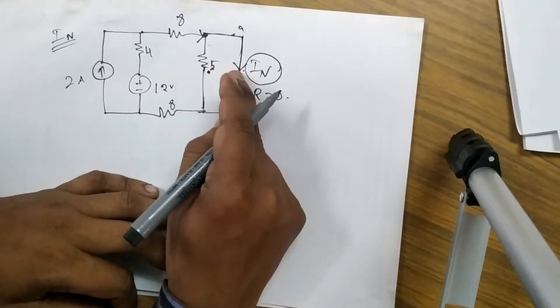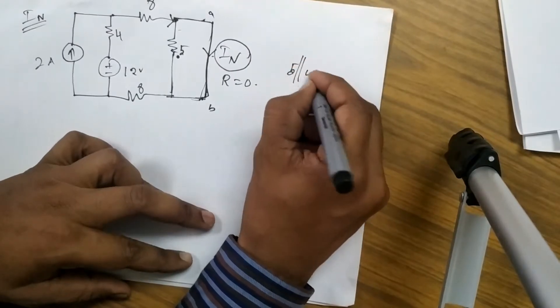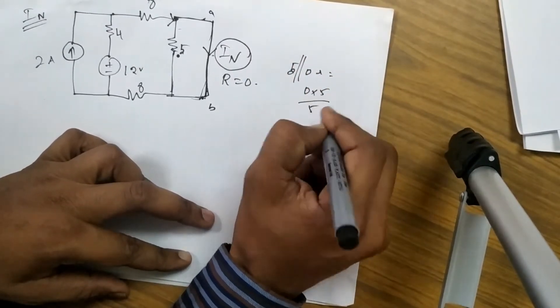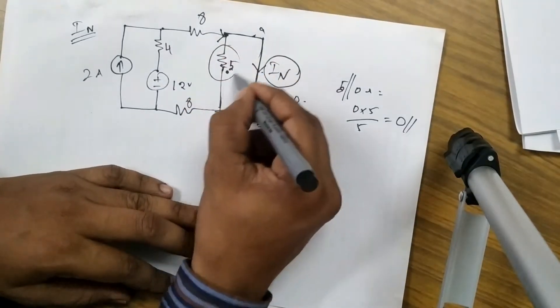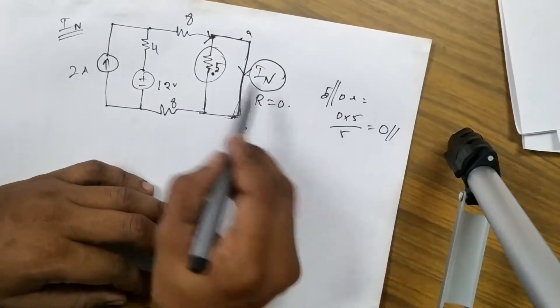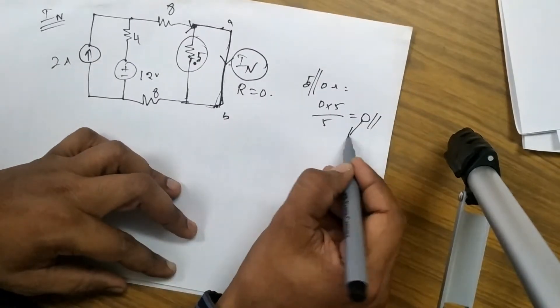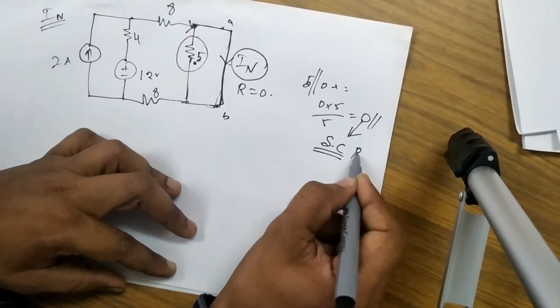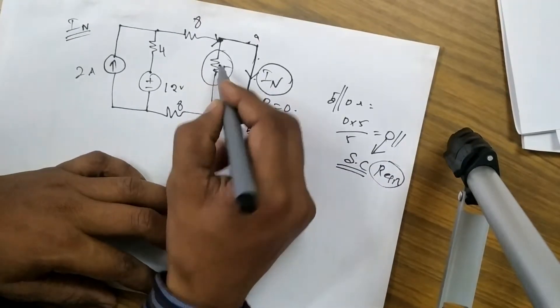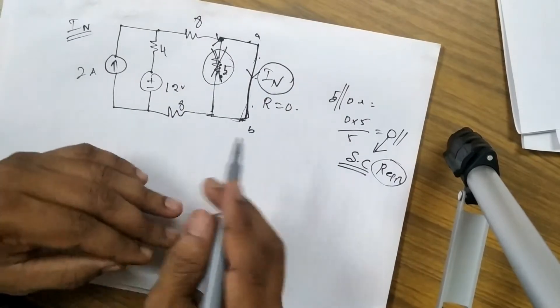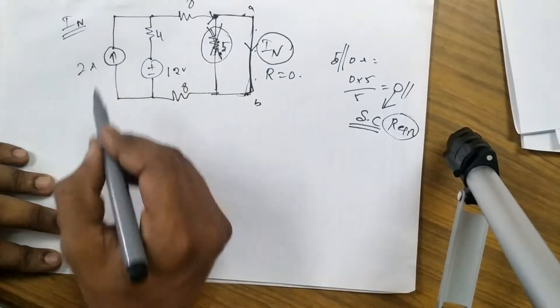Or other words, we can say this is short-circuit terminal which means R value is 0. If you do parallel combination of 5 and 0, what will you get? 0 into 5 divided by 5, you will get 0. Which means this resistance has no value, 0 means again it is called short-circuit. So parallel to short-circuit resistance that has no value, so we can simply remove this.